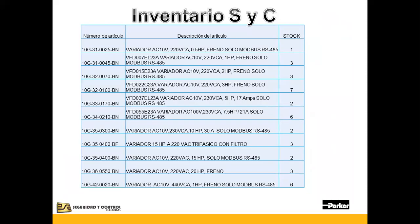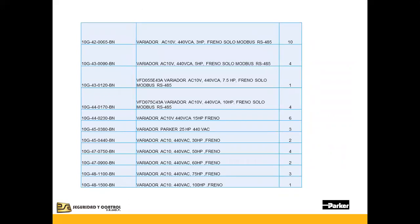Parte del inventario que maneja Seguridad y Control, a manera de garantizarle a los clientes una pronta respuesta en sus requerimientos y un tiempo de entrega muy efectivo. Manejamos existencia desde medio HP, subiendo en 2 HP, 3 HP, 5, 7.5, 15, 20, hasta existencia en físico de 100 HP. Ya un poco más arriba podemos solicitarlo directamente de planta, con muy buen tiempo de entrega porque en planta también se manejan existencias en físico.